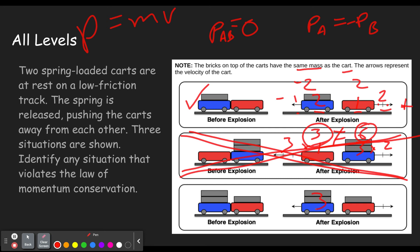In our last one, we have a mass of three and a mass of two, with a velocity of one and a velocity of two. One times three is three, and two times two is four. Three does not equal four, so that one also violates the law of conservation of momentum — it would not happen. These would actually be going different speeds; for example, this could be going two and this could be going three, giving three times two and two times three.